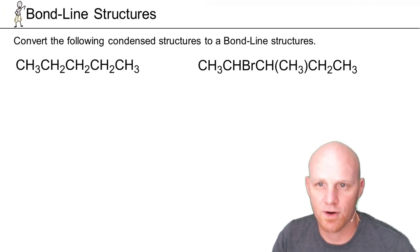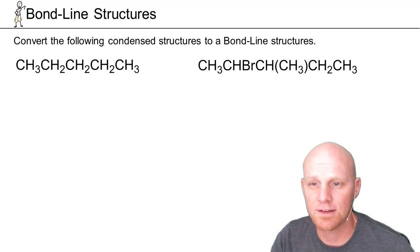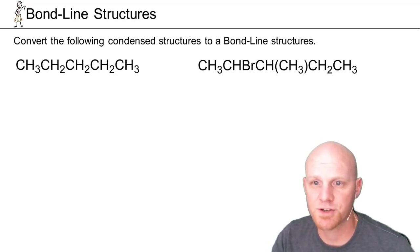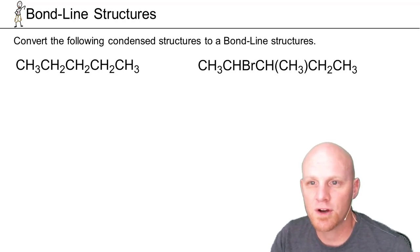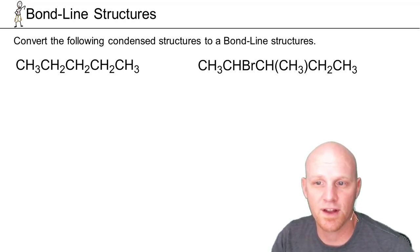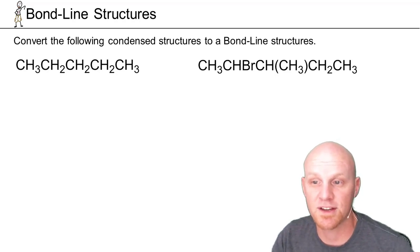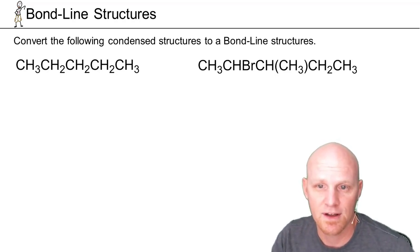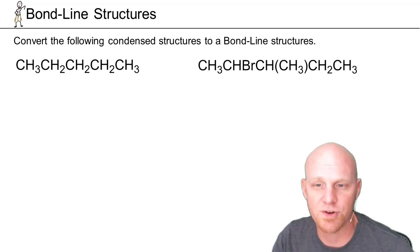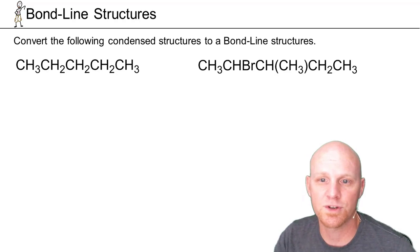Now we've got to put together our three different ways of representing molecules: bond line structures, condensed structures, and Lewis structures. It's easiest to turn Lewis structures into either bond line or condensed structures. And it's easiest to connect bond line structures to condensed structures through the Lewis structure. For now, I would connect the two via Lewis structures.